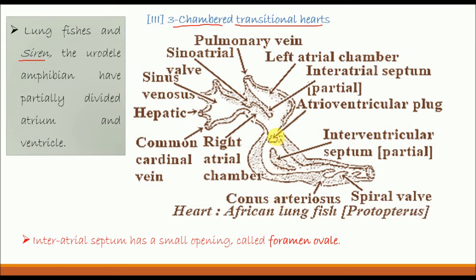The figure of this heart belongs to African lungfish, Protopterus. In lungfishes, especially African lungfish and South American lungfish, pulmonary veins open into the left atrial chamber. Whereas in Australian lungfish, the pulmonary veins open directly into the sinus venosus.